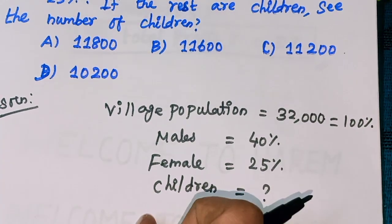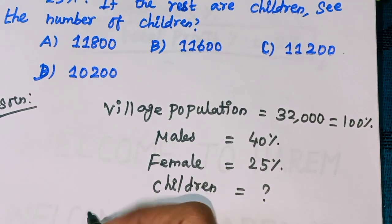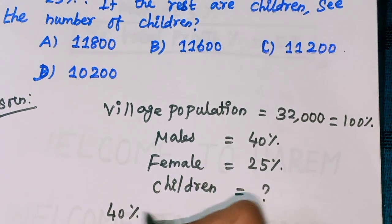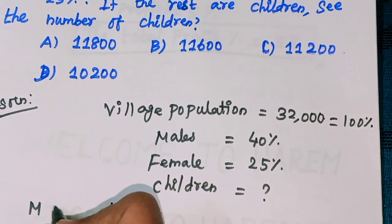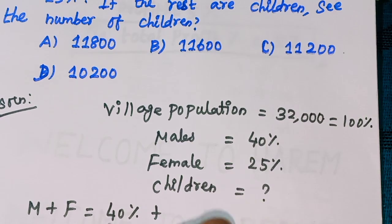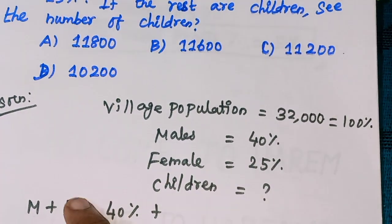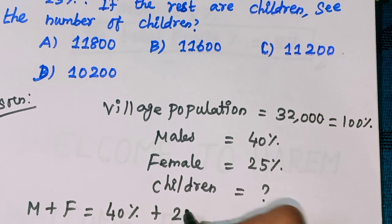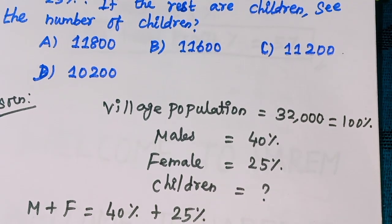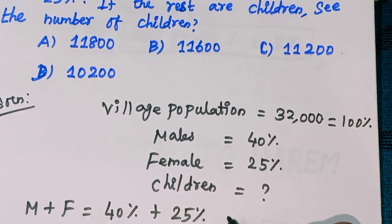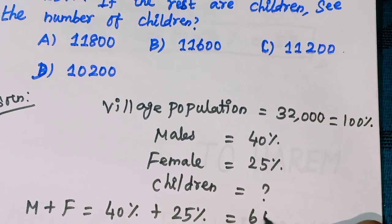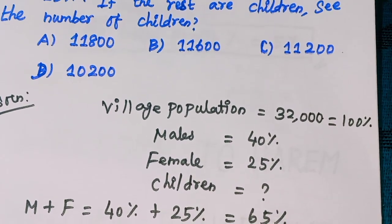So children percent, first find out. 40% male plus female equal to 40% and female equal to 25%. The sum of 40 plus 25 equal to 65, so 65%.